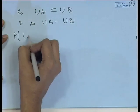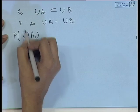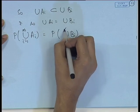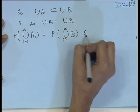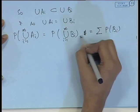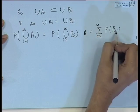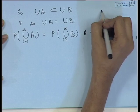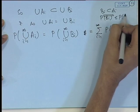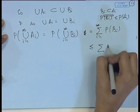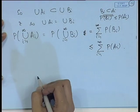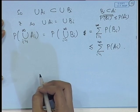The probability of the union of A_i, i=1 to infinity, equals the probability of the union of B_i, i=1 to infinity, which by countable additivity equals the sum of probabilities of B_i, since the B_i are disjoint. Since each B_i is a subset of A_i, the probability of each B_i is less than or equal to the probability of A_i. Therefore this becomes less than or equal to sigma of probability of A_i, i=1 to infinity. This proves the countable sub-additivity of the probability function.